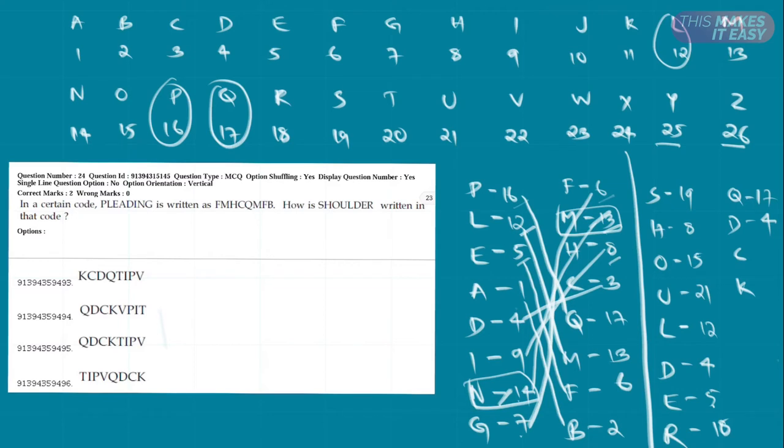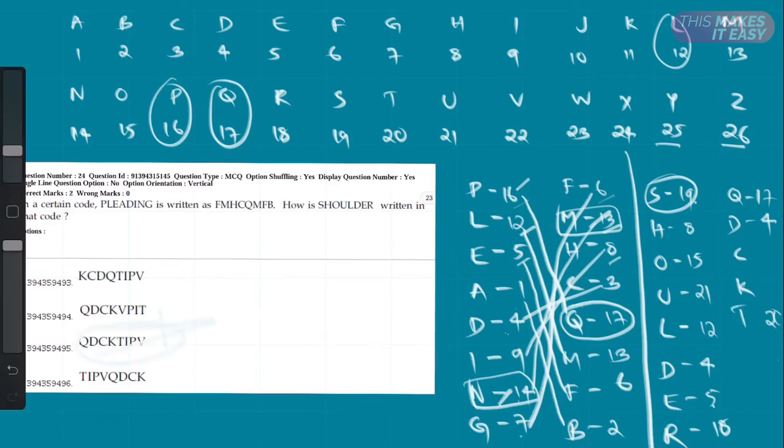There is no need of solving that because already in both options it is same. Now we have to check the fifth alphabet. Here the fifth alphabet is Q. It corresponds to first alphabet plus 1. So first alphabet here is S plus 1, so it will be 20. What is the corresponding alphabet for 20? It is T. So we have got Q, D, C, K, T. So our answer will be the third option.